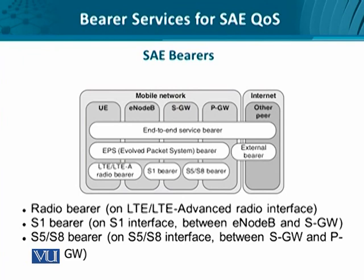The user equipment basically opens the end-to-end service bearer with the application server. The application server correspondingly opens up lower layer bearers so that the user equipment is kept as independent of the configuration and QoS complexity as possible.